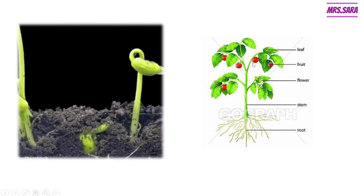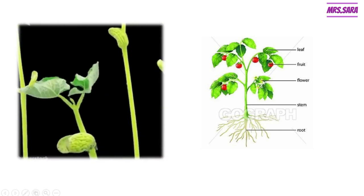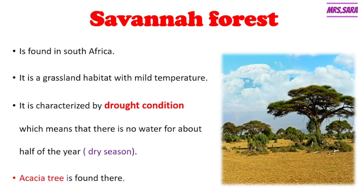So the parts of any plant start with roots, stem, leaves, flower, and fruit. Now we're going to talk about one of the most important places in South Africa, called savannah forest. Savannah forest is found in South Africa. It's a grassland habitat — grassland means it has grasses all over the place. Habitat means home.